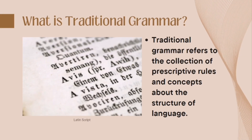Traditional grammar and modern linguistics are two branches of language studies. Traditional grammar is the oldest of the two, and its origin runs back to the 15th century. Linguistics is actually a relatively new branch of language study. It is also important to note that traditional grammar mainly focuses on the written language, while modern linguistics considers speech as the basic form of the language.